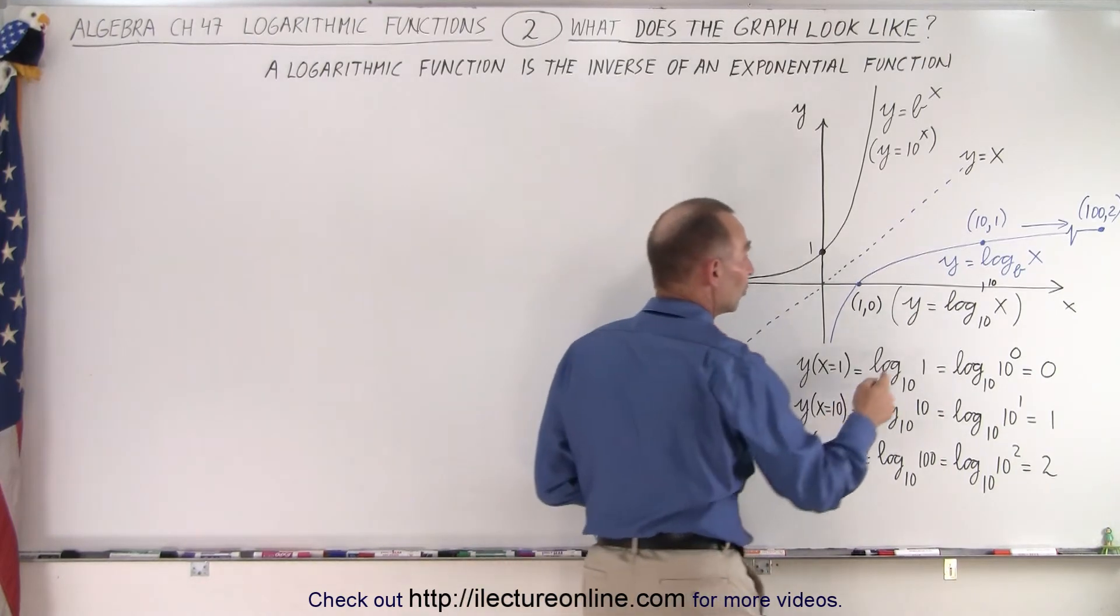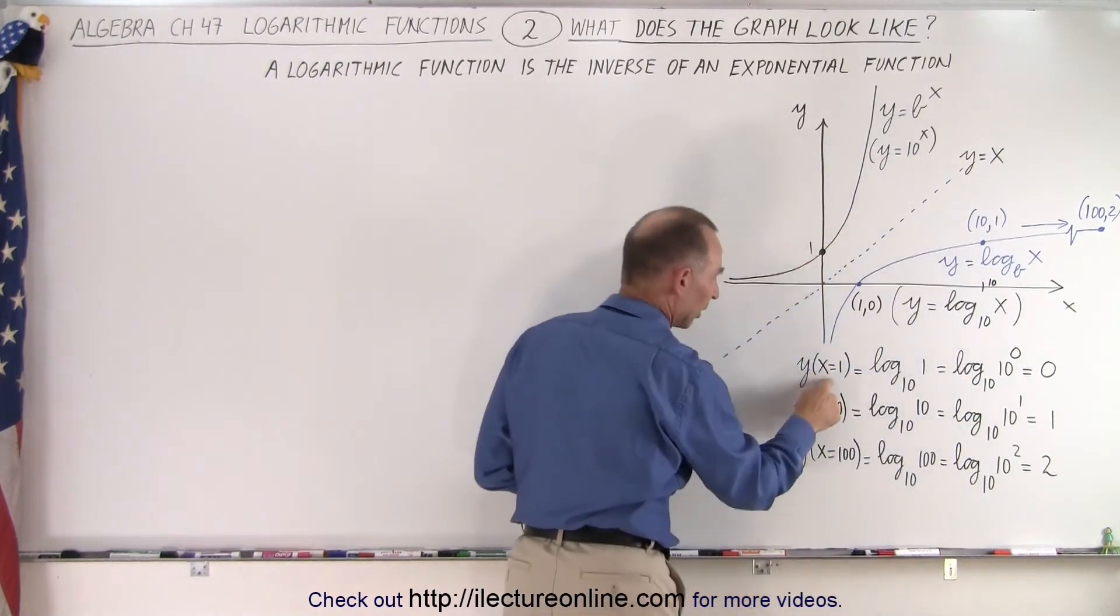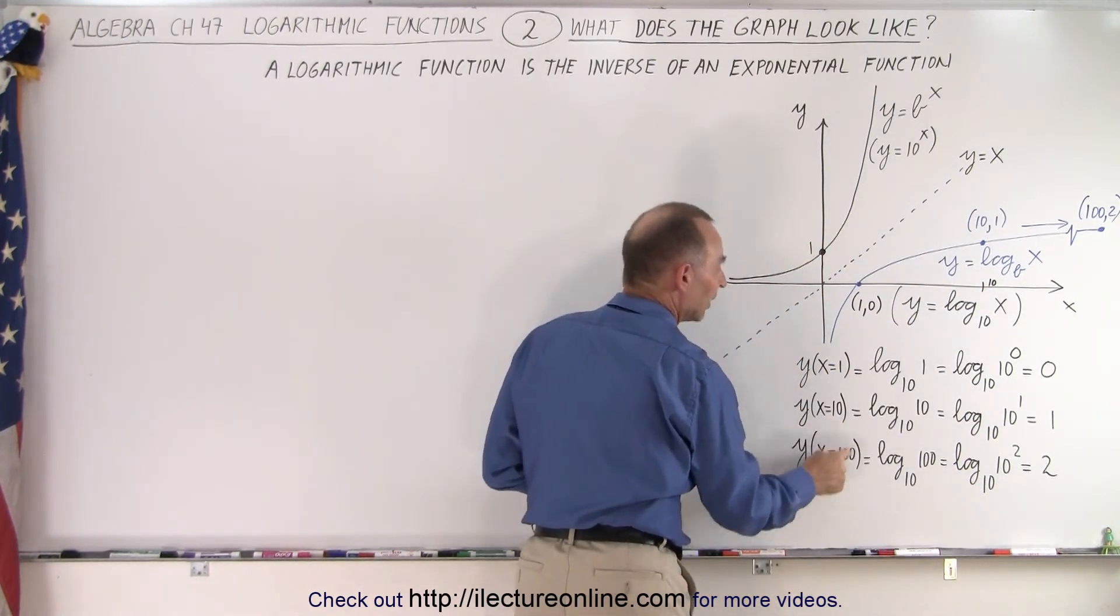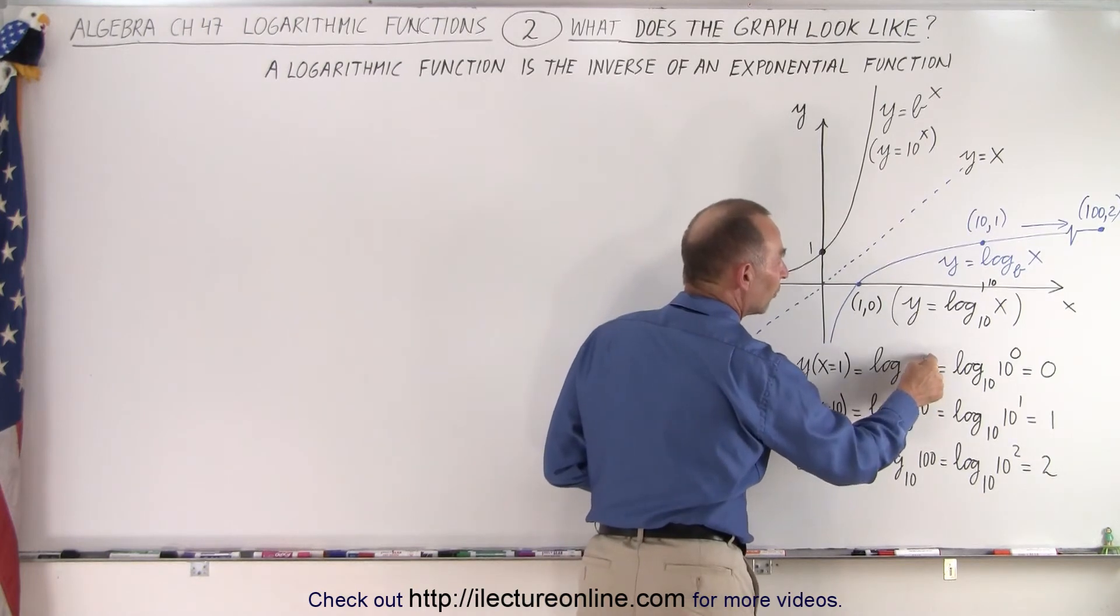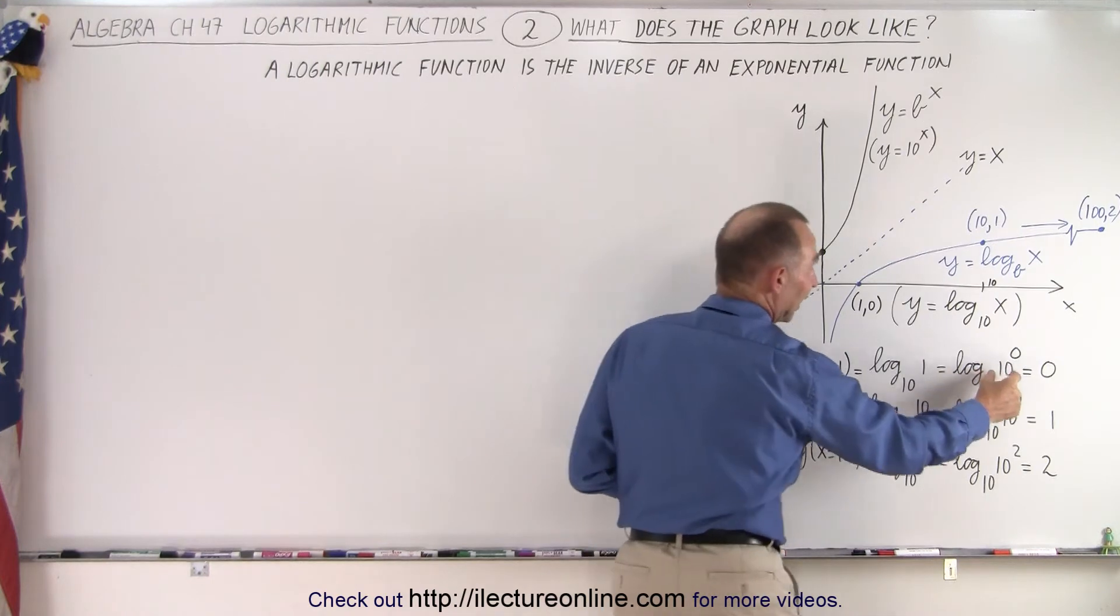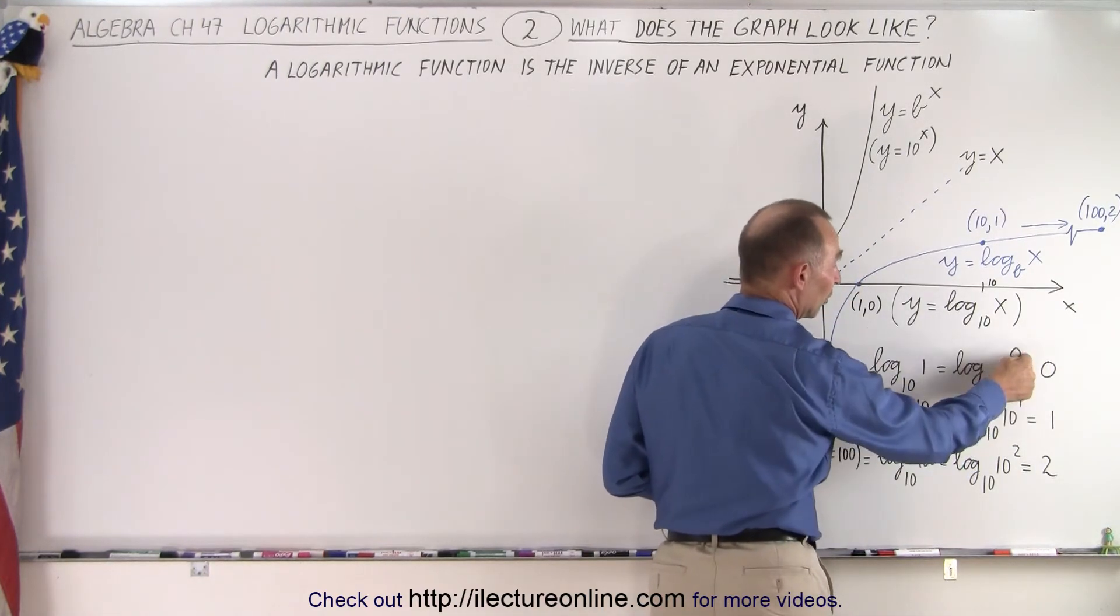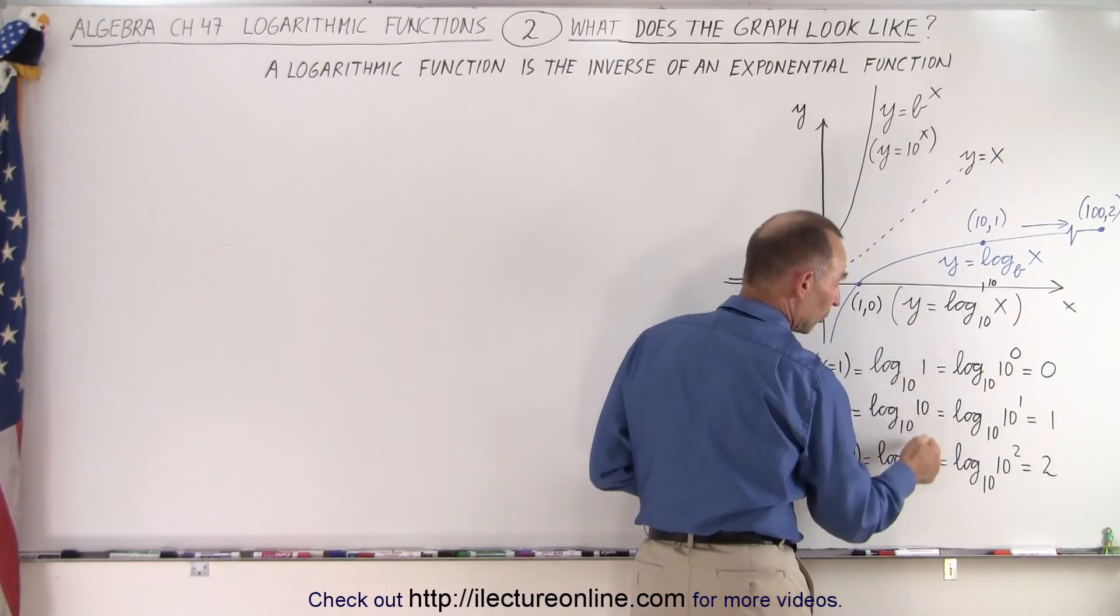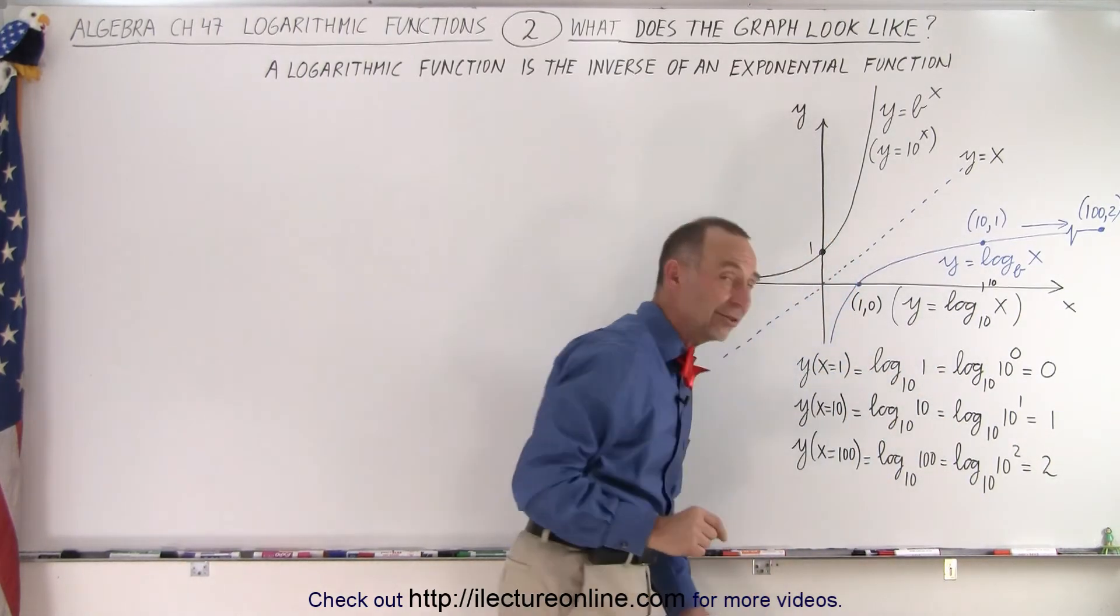The logarithmic function is y equals the log of x. And that's how you can graph it, by simply plugging in values for x. Then, take the log of that value, and then that's equal to the exponent of the base 10. So, here it's 0, 1, 2, or the number of 0s of the number we're taking the log of, if the base is equal to 10.